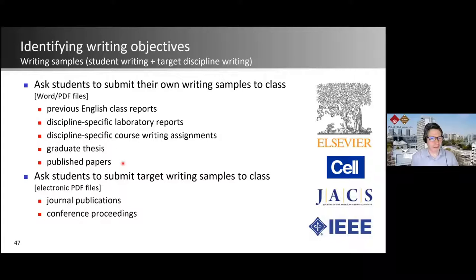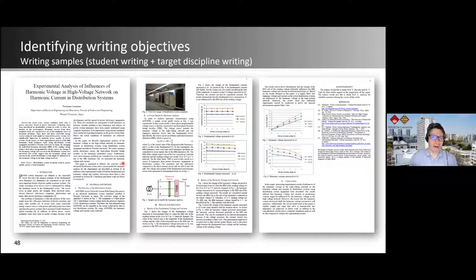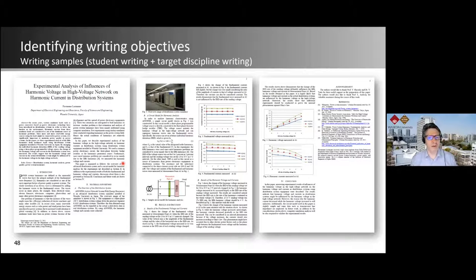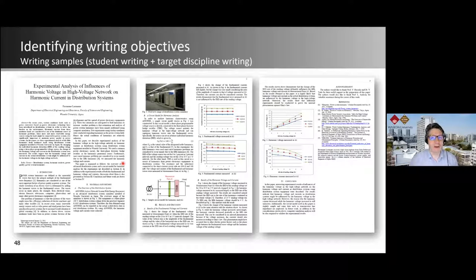You can also ask students to submit target writing samples — journal publications, conference proceedings — and get them to bring a target journal to class to examine the language. Just looking at one example can give you all kinds of insights. For instance, looking at this student paper title — 'Experimental Analysis of Influences of Harmonic Voltage in High Voltage Network on Harmonic Current in Distribution Systems' — you notice a singular/plural error in 'network,' but you get a feel for what this kind of writing looks like and can think about language goals.